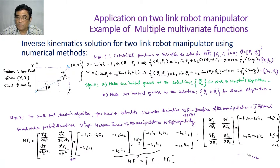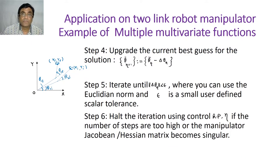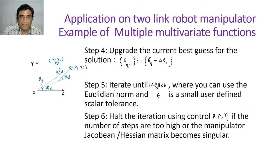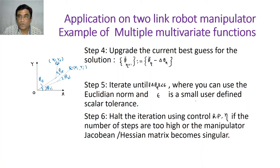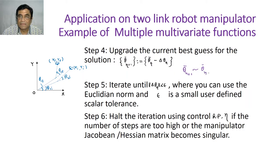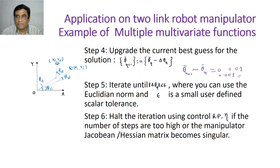Step four: you need to update the current best guess for the solution, and iterate until delta theta n is less than some epsilon. You can use the Euclidean norm. Epsilon is user-defined — you define how satisfied you are when theta(n+1) and theta(n) differ by 0.01, 0.001, or 0.0001. So epsilon is a user-defined parameter.